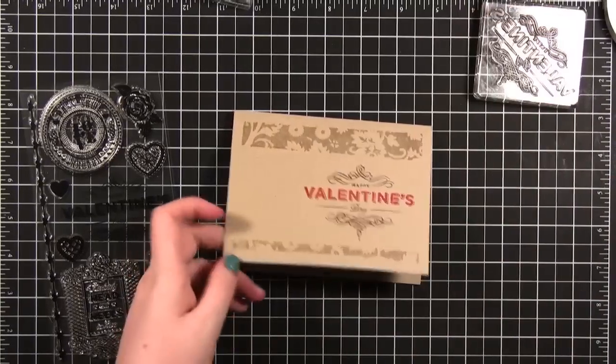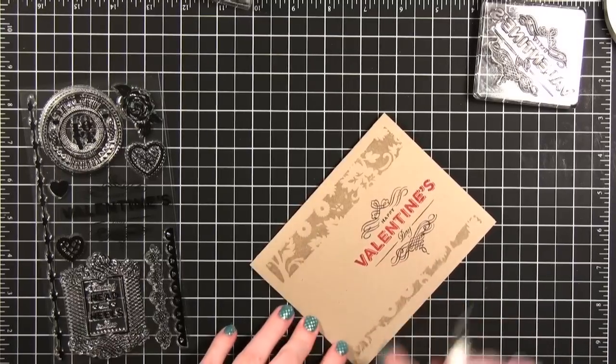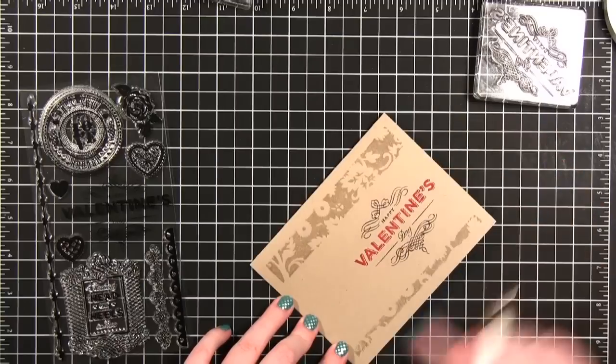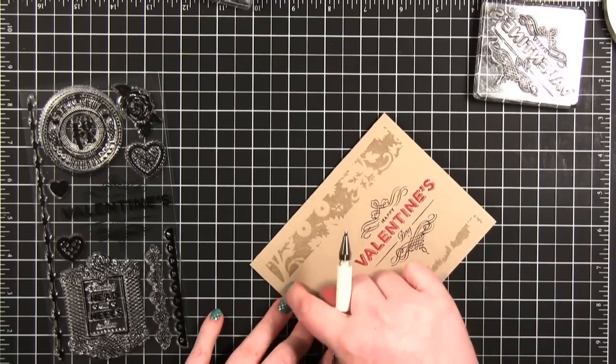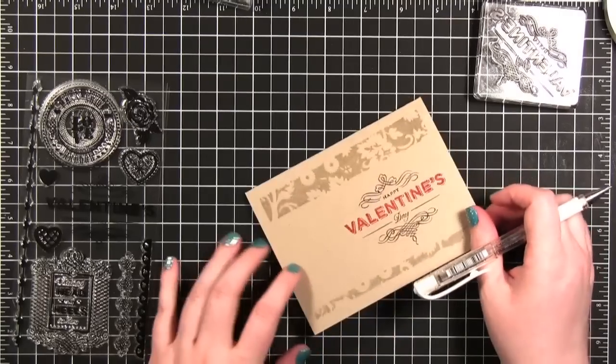All right, the last thing I'm going to do to finish off this card is to do some white stitching. I'm going to do kind of like a grid pattern. I'm going to do all the corners or all the sides. Then I'm going to do around these sections that I created with masking too.